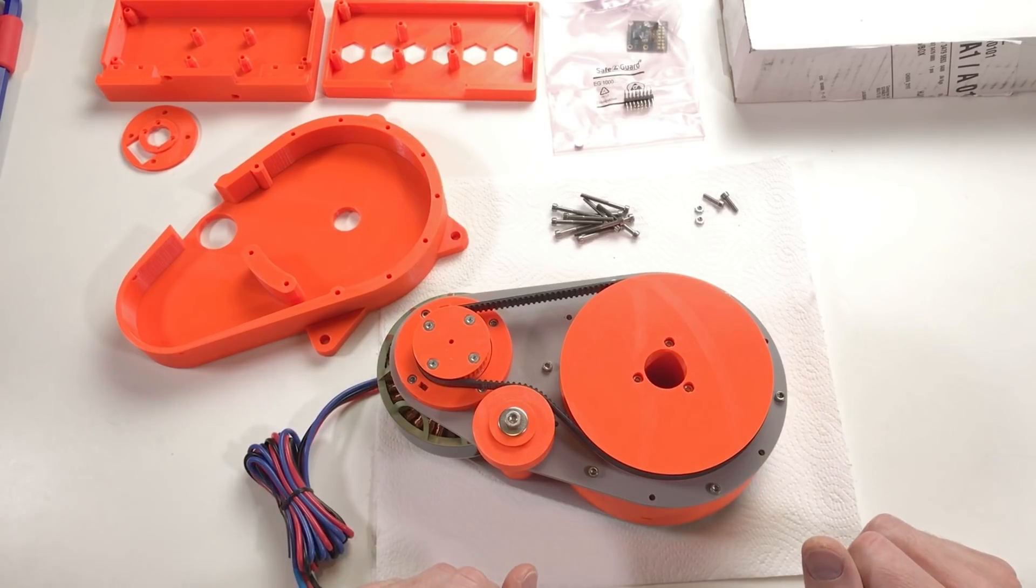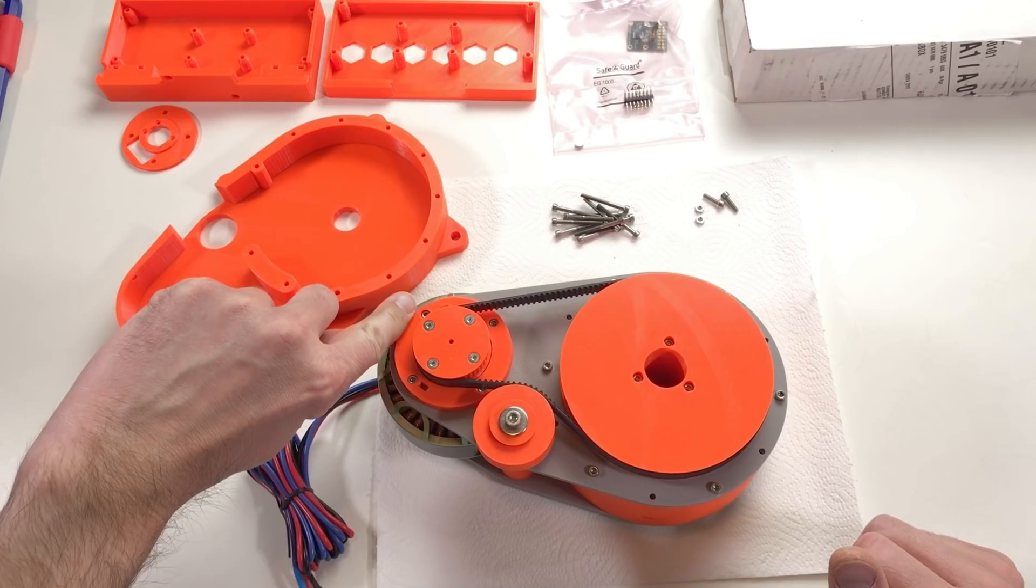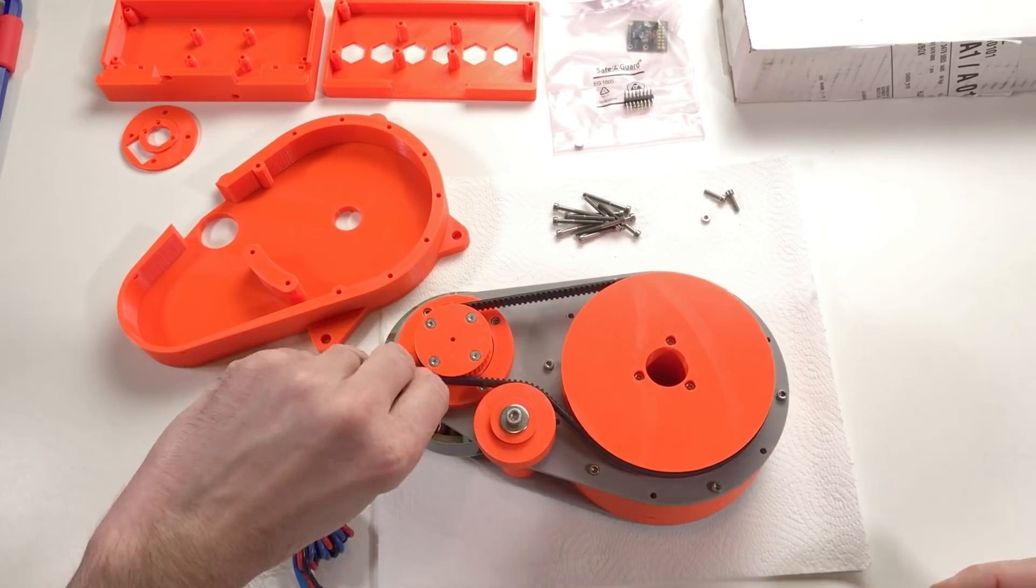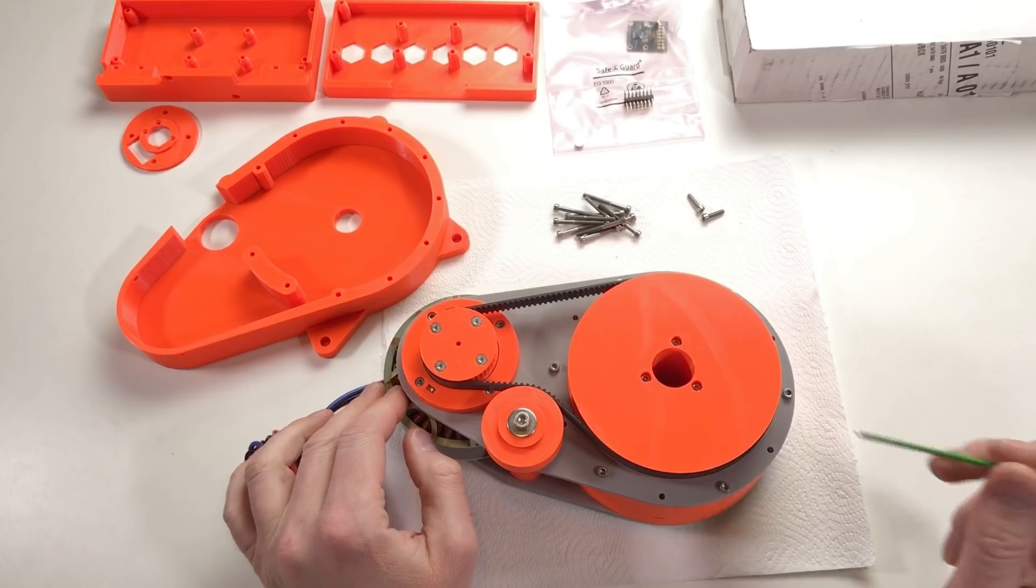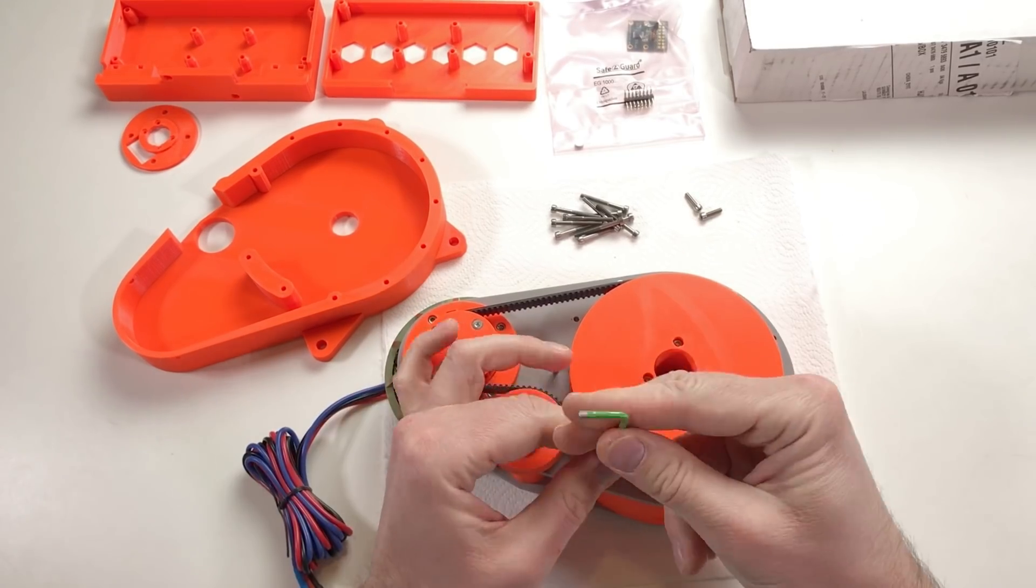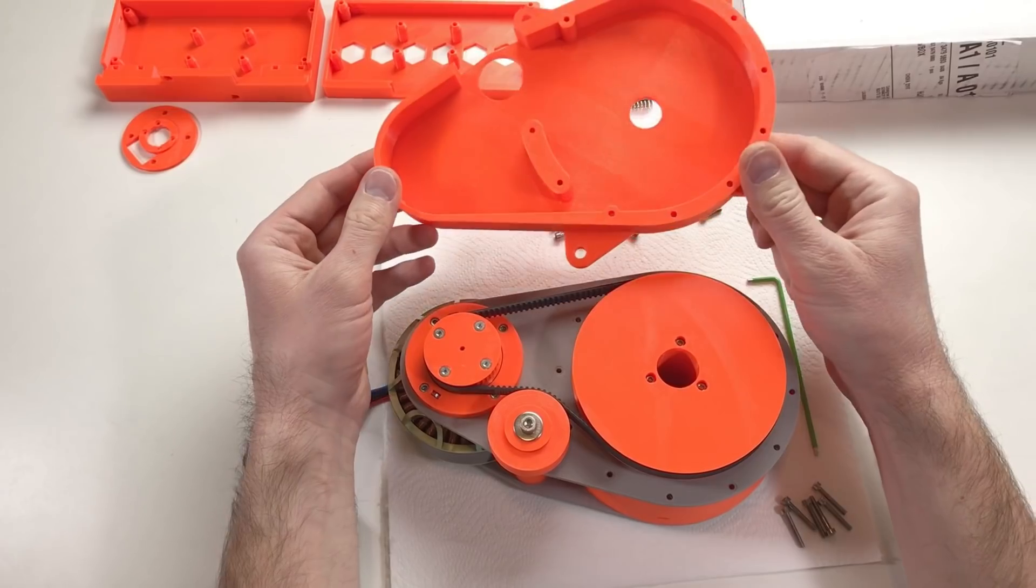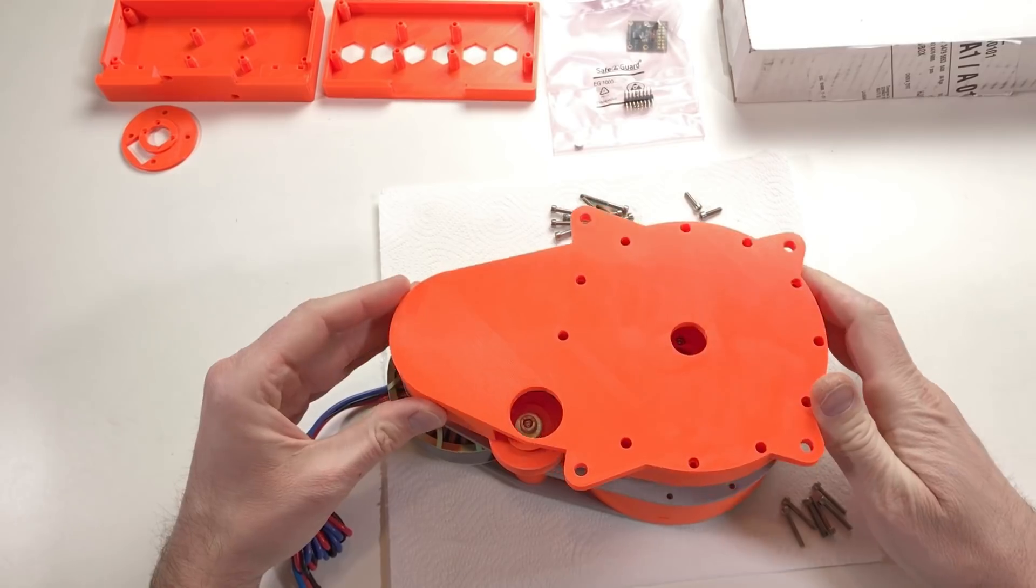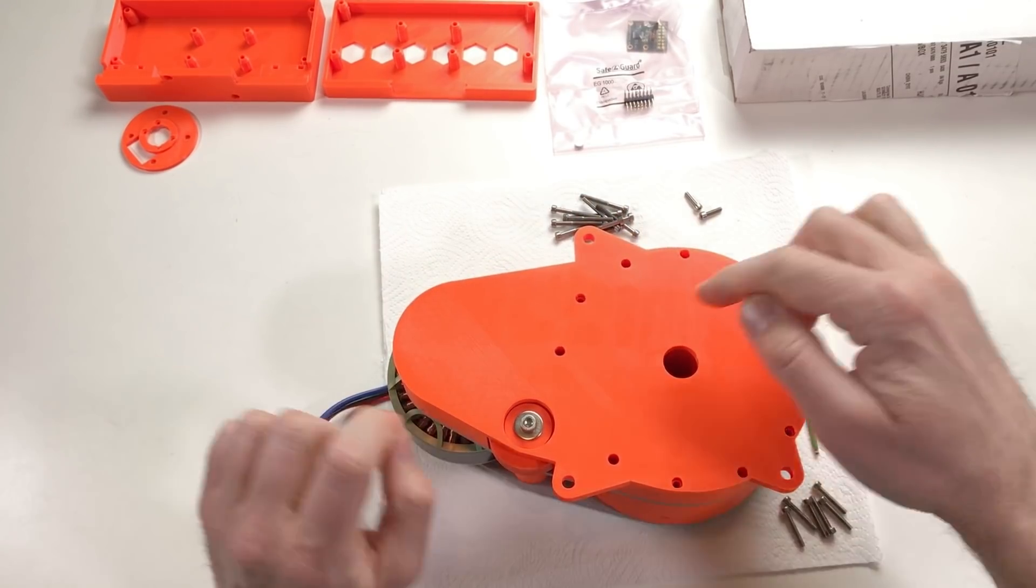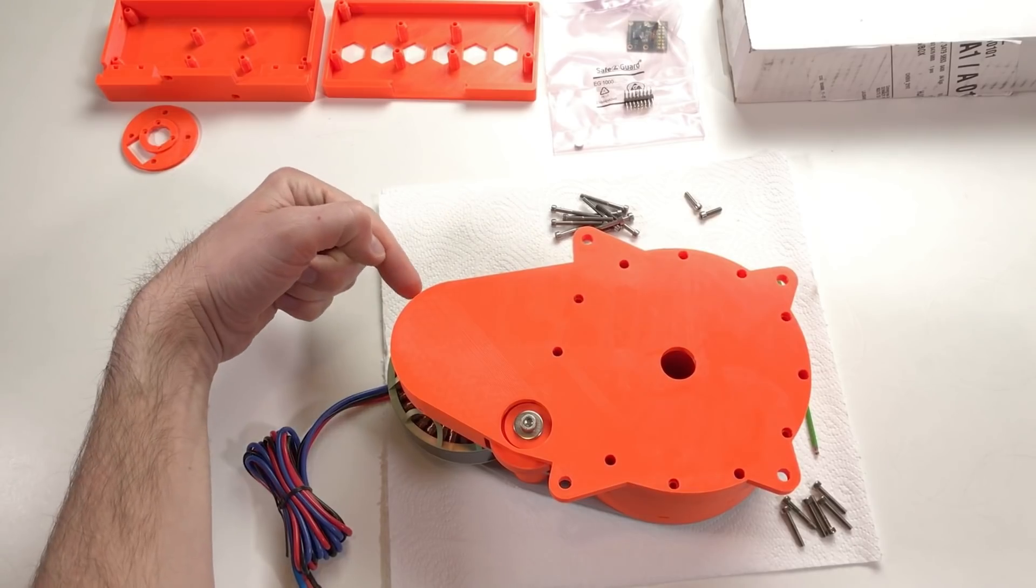To install this cover, first of all I will install embedded nuts. One goes here and another one goes here. Next I need to dismount these screws. And now this cover goes on top. Oh great! And we need to fix it with plenty screws here and one screw here and another one here.